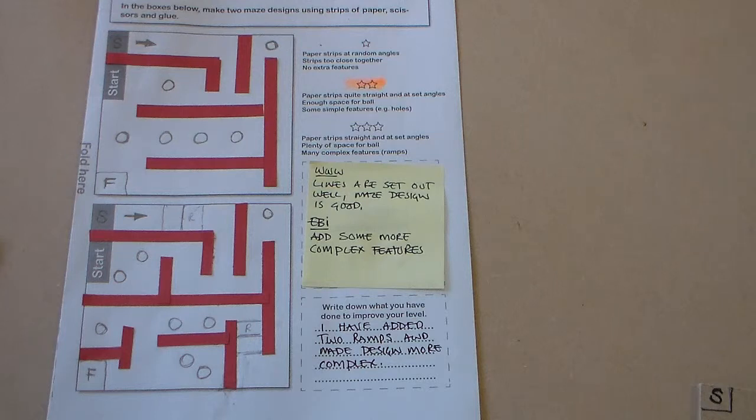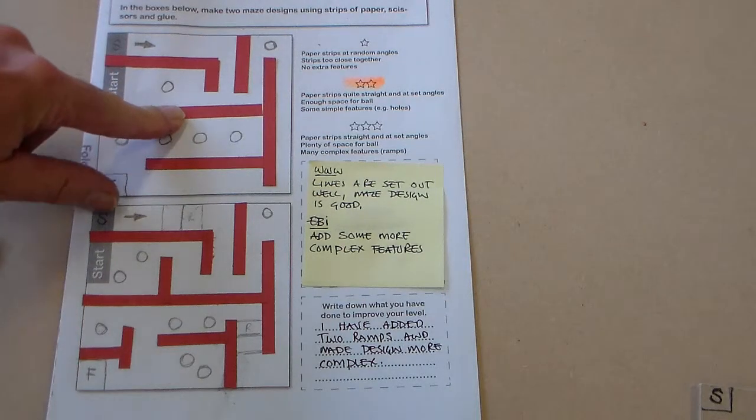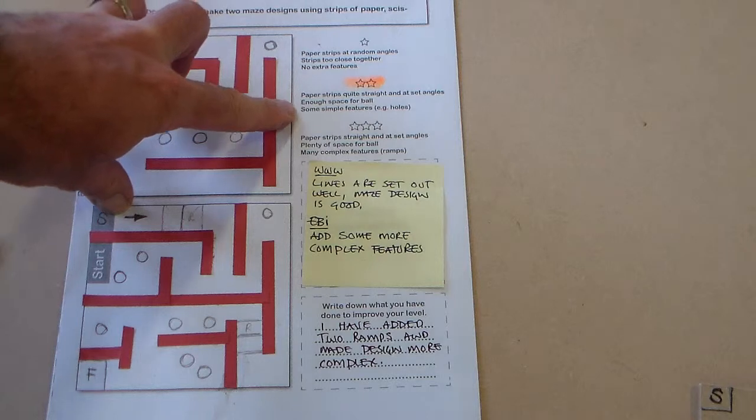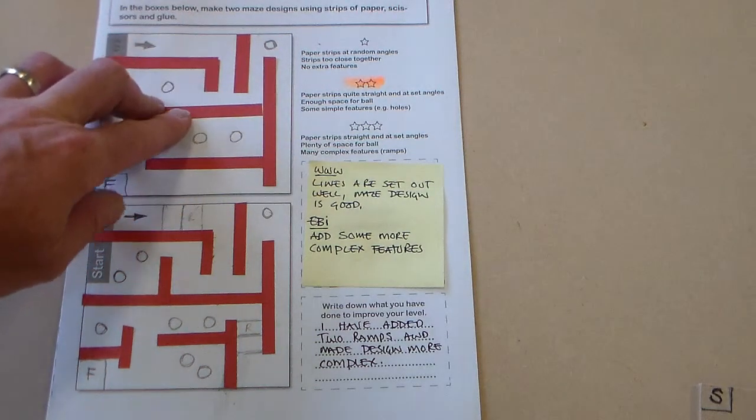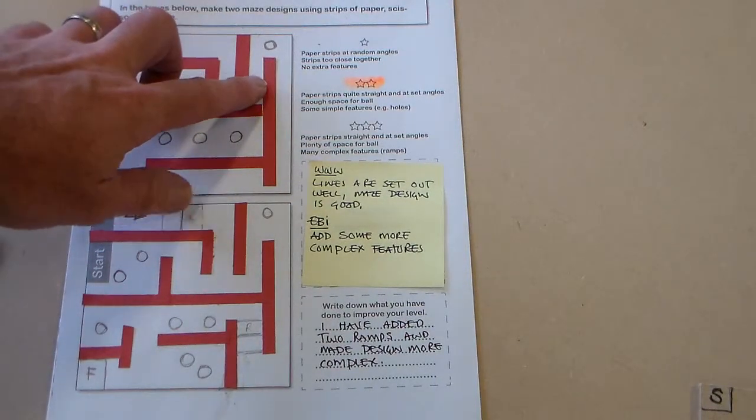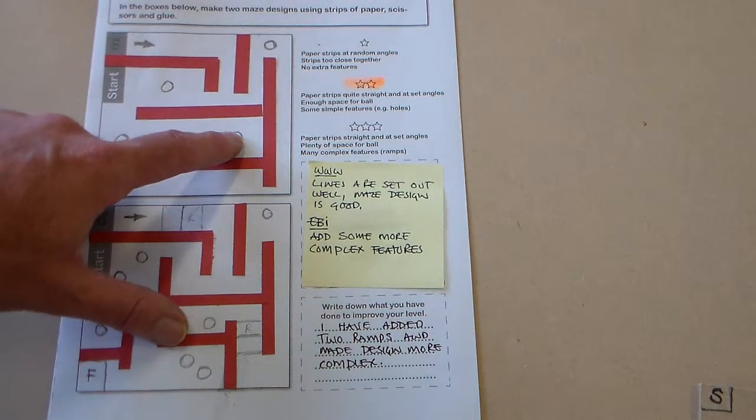On this sheet you can see that we have two design ideas. The first design idea here made using paper strips has been marked at two stars. It says the paper strips are straight, there is enough space for the ball and it has some simple features like holes.